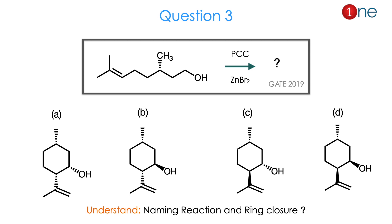Question number 3. The starting material is a long chain alkyl system with an alkene, one methyl group above, and one alcohol at the terminal position. You are using PCC and zinc bromide. They ask you to find the product. Definitely a ring closure occurs because a new six-membered ring is formed. What happens to the methyl, alcohol, and isopropenyl group during ring closure is important — whether the alkene is above or below the plane or syn/anti to each other. One named reaction is involved here. The answer is C.